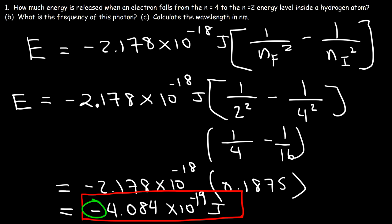Why is this answer negative? When the electron falls from a high energy level to a low energy level, a photon is emitted, so the electron is losing energy — that's why it's negative. If the electron jumped from the second to the fourth it would be absorbing energy, so E would be positive. The negative sign indicates that energy is being released as the electron falls to a lower energy level.